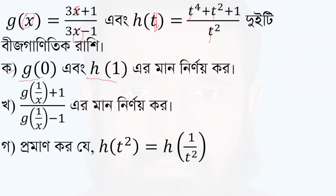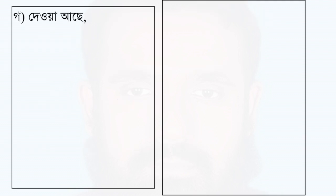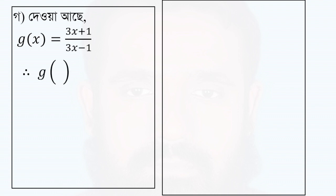This is the most important question. We need to find g(1/x + 1) and g(1/x - 1). Given g(x) = (3x+1)/(3x-1), we substitute 1/x in place of x.